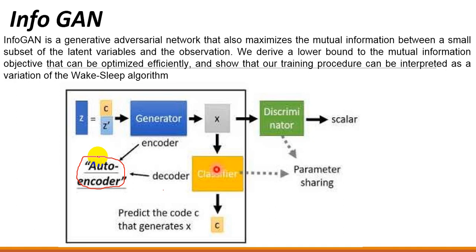The important point here is that different algorithms or models have been added into the GAN framework in multiple forms, enhancing its quality. Researchers have written separate papers based on these innovations, covering theses and PhD work. The focus is on understanding what optimizations are being made — for example, working on the MNIST dataset to classify digit stroke variations.